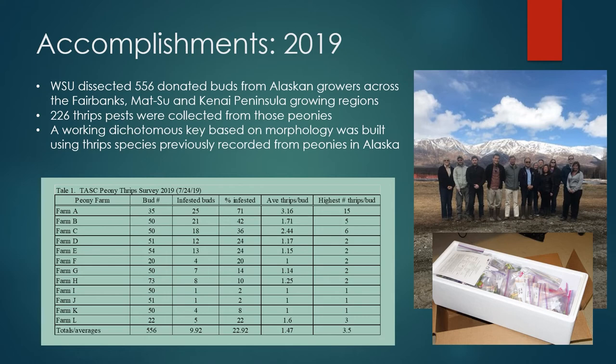In 2019, over 550 peony buds from three different growing regions were shipped to our laboratory in Washington State to be dissected. From these samples, we collected 226 adult and larval thrips for use in our morphological studies. Using previous records of thrips taken from peonies in Alaska, I constructed a draft dichotomous key based on morphological characters and began the process of slide mounting and identifying the unknown thrips specimens. The table provided shows data from 12 different farms on the number of buds dissected, number of infested buds, percentage of infested buds, average number of thrips per bud, and the highest number of thrips recorded in a single bud.